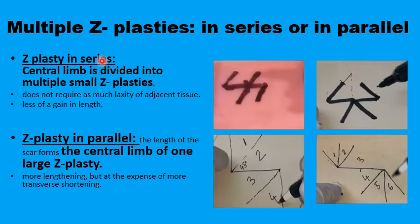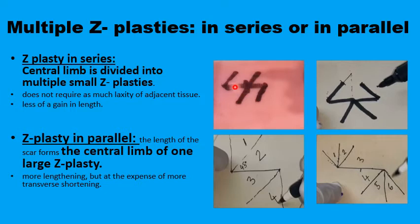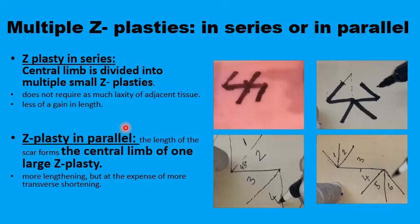There are two types of multiple z-plasty that serve different purposes. The z-plasty in series is the one to consider when you have a limited amount of tissues in the transverse direction — the direction above and below the central limb. In this situation, the central limb is divided into smaller units, so you have multiple z-plasties along the central limb, each with 1 centimeter, recruiting only a limited amount of transverse tissue to achieve lengthening.